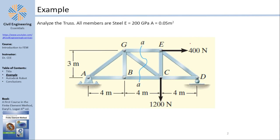The truss in question has loads of 400 newtons and 1200 newtons. It is taken from 'Structural Analysis' by R.C. Hibbeler, a well-known structural analysis book. I chose this truss because it represents something you could face in real life, though the loads have been modified. The members are steel with a cross-sectional area of 0.05 square meters.